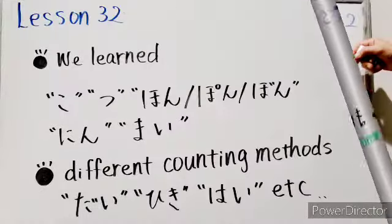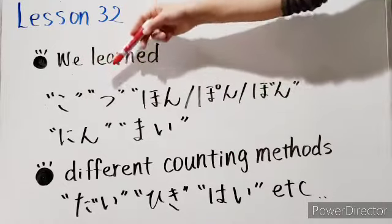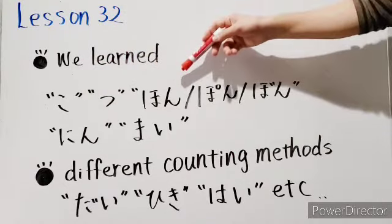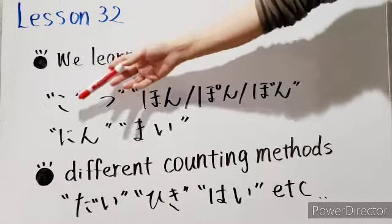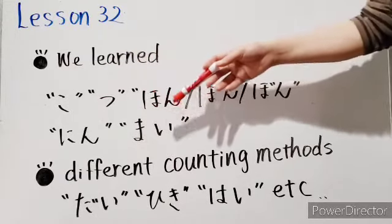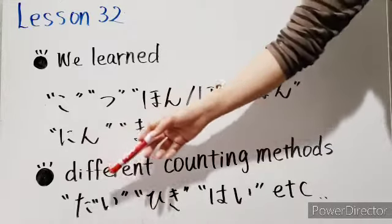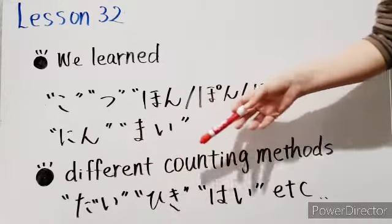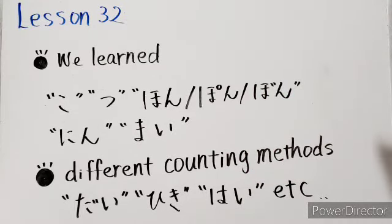We learned ko, tsu, hon, pon, bon, nin, mai. Besides them, we still have a lot of different counting methods, such as dai, hiki, hai. I will show you how to use these counting methods each time we see them in my lesson videos.